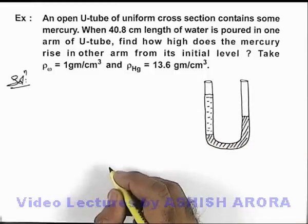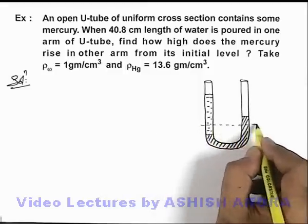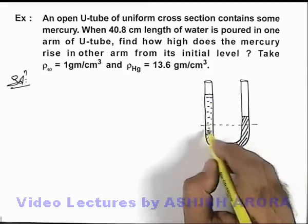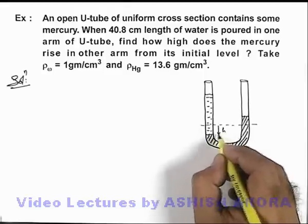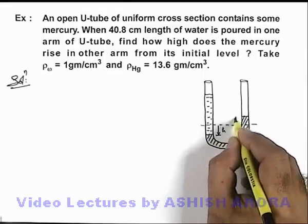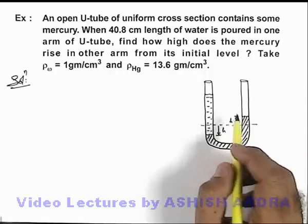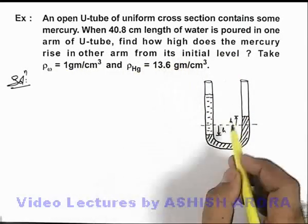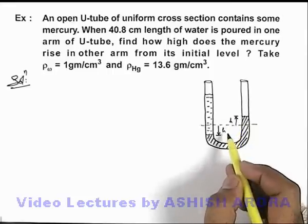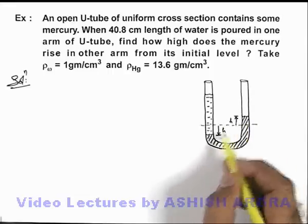Now in this situation, earlier the mercury level was at this value, and after pouring the water in one side, the left-hand side mercury level will go down by h and the right-hand side it will rise up by h. We are required to find how high the mercury rises in the other arm from its initial level, so we need to find h. The level difference on the two arms of the U-tube is 2h.